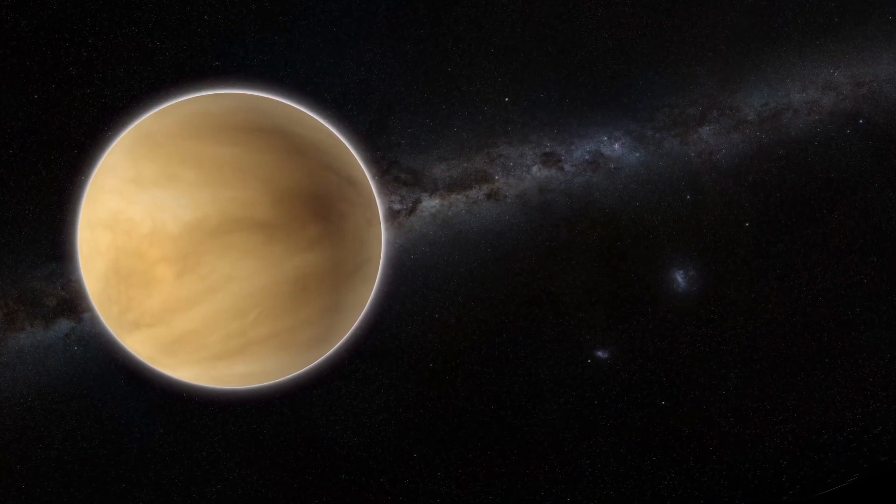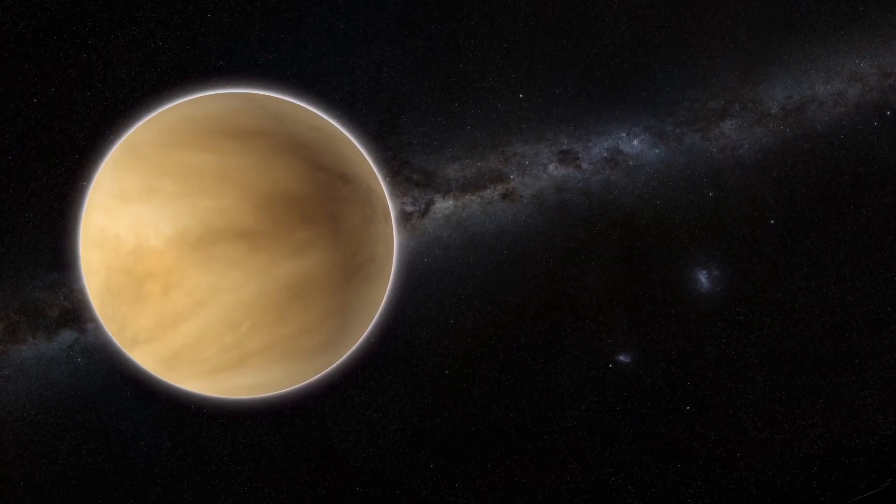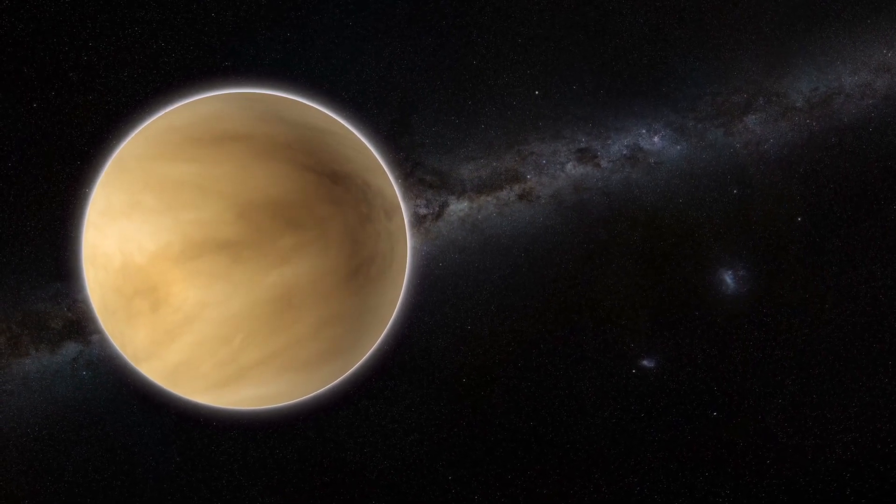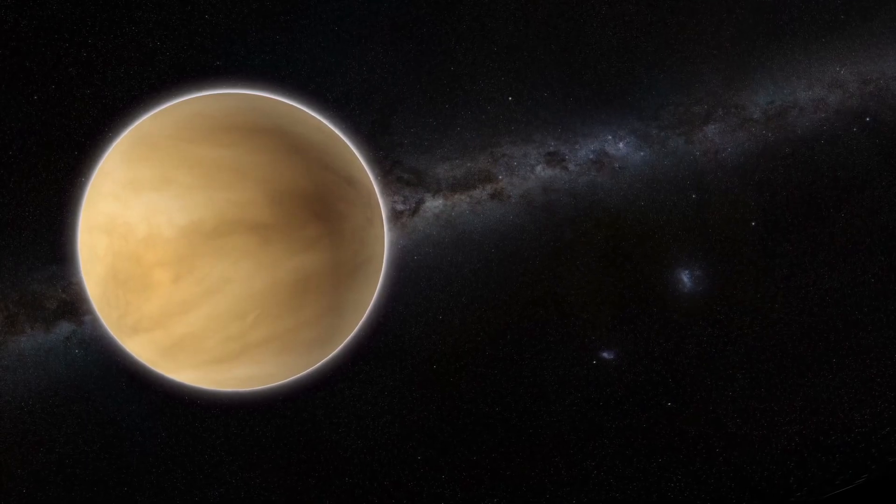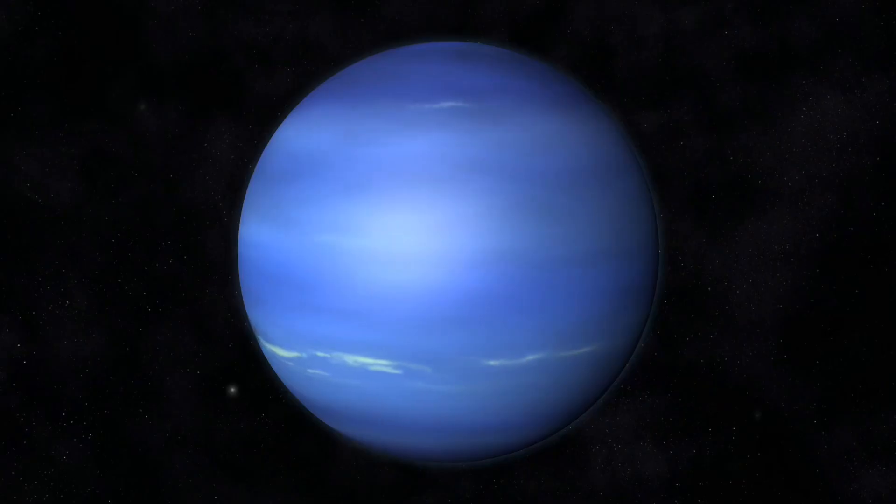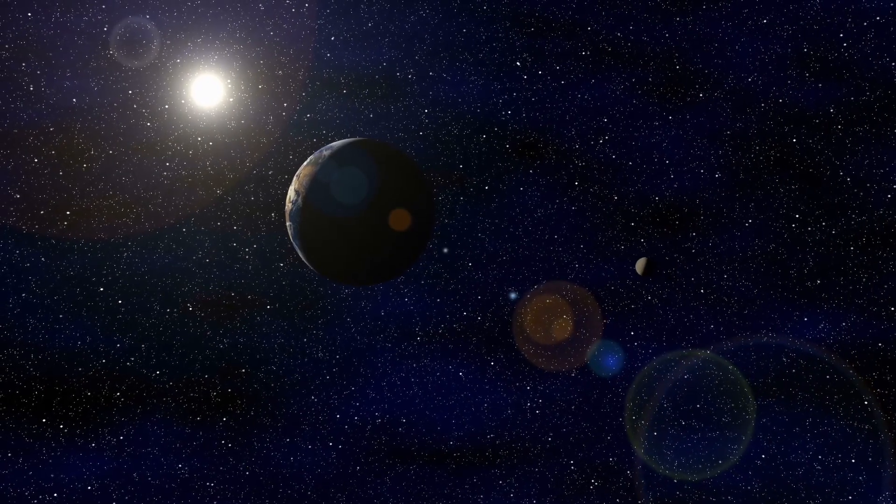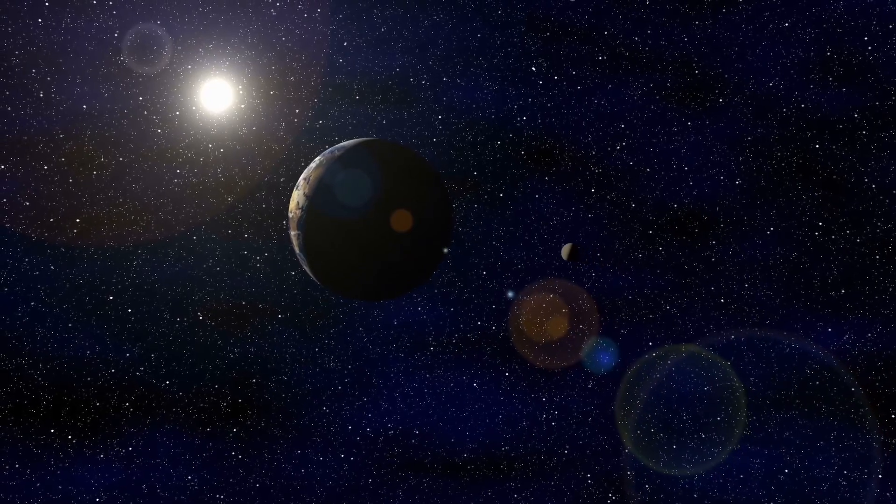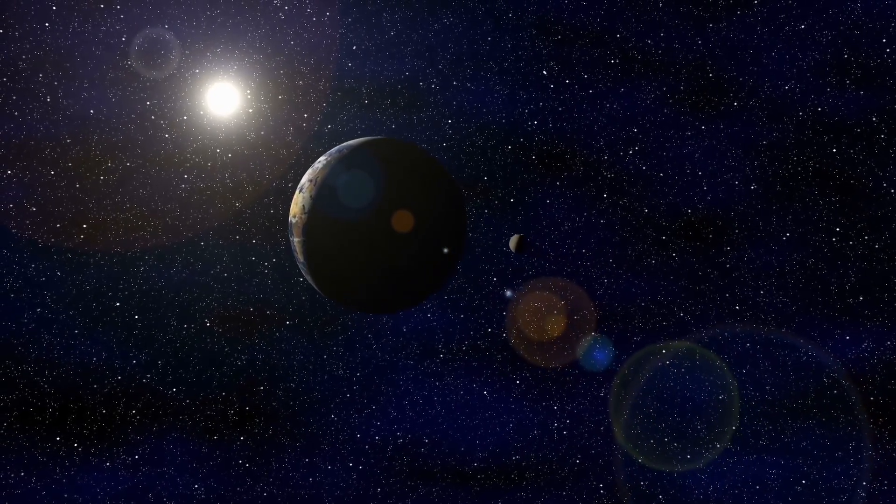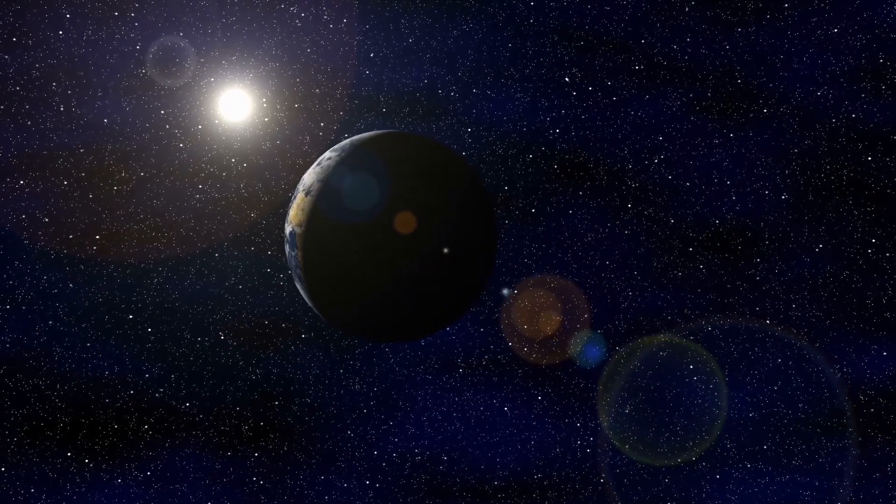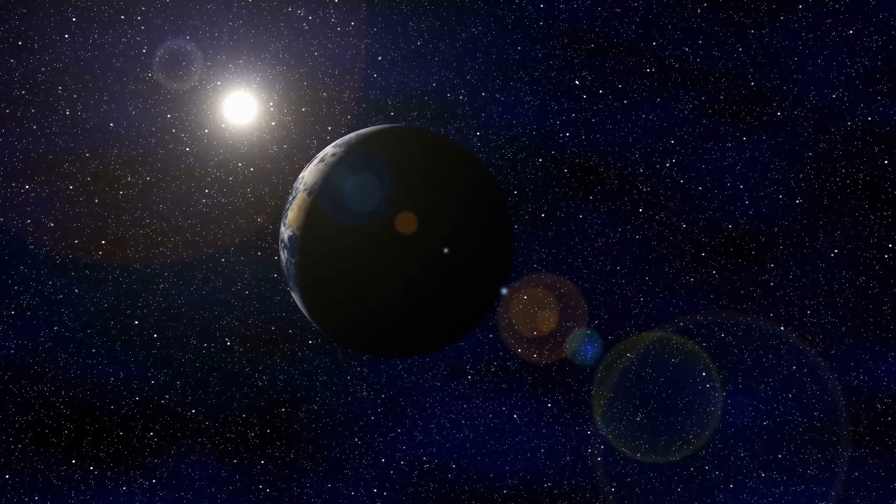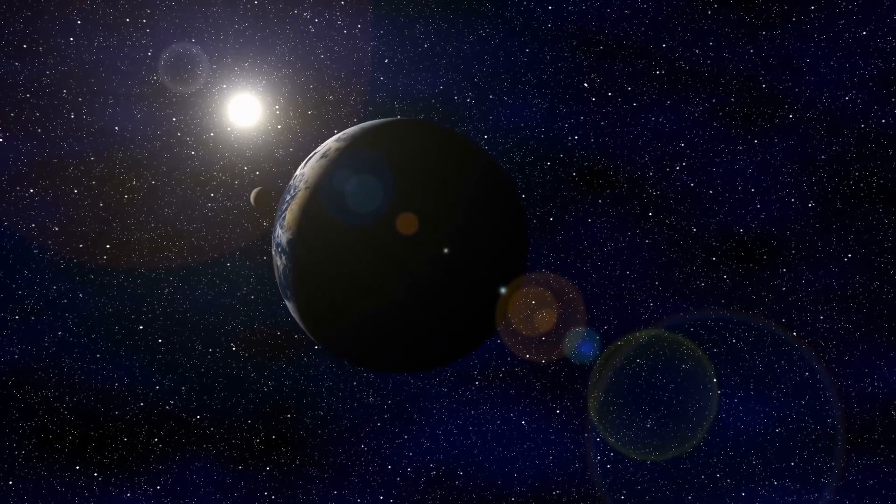It's interesting to note that some planets, like Venus, have a retrograde rotation, which means they rotate in the opposite direction to their orbit around the sun. This is different from the prograde rotation of most planets, including Earth. The rotation of a planet affects many aspects of its environment, including the length of its day and distribution of sunlight and darkness. It also influences the planet's weather patterns and formation of the magnetic field.